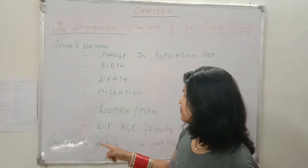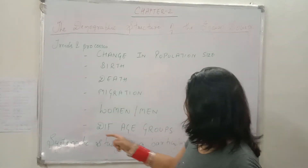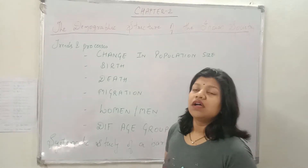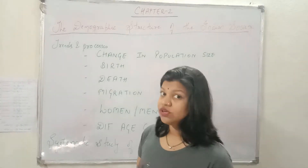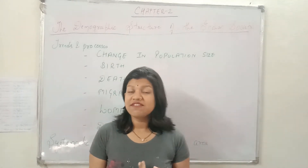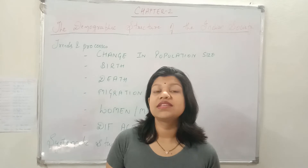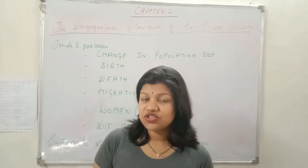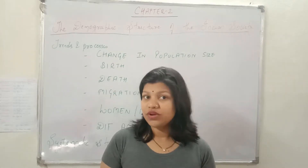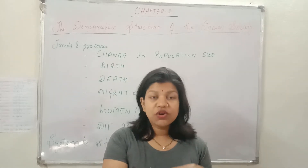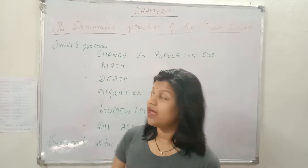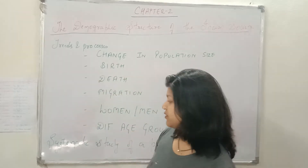Demography also tells about different age groups. We have four types of age groups: first is infancy, then childhood, adulthood, and old age. We get to know about all these four groups through the demography structure.